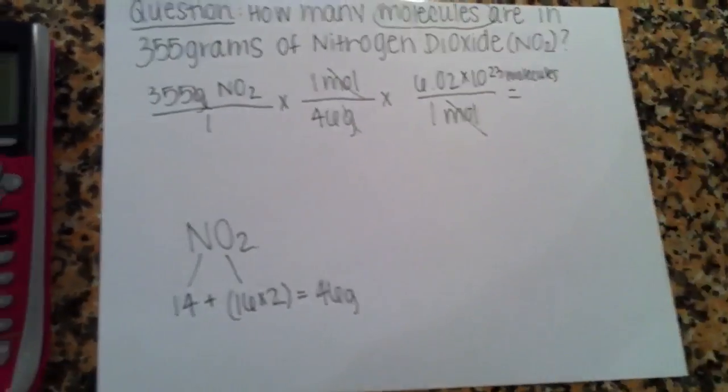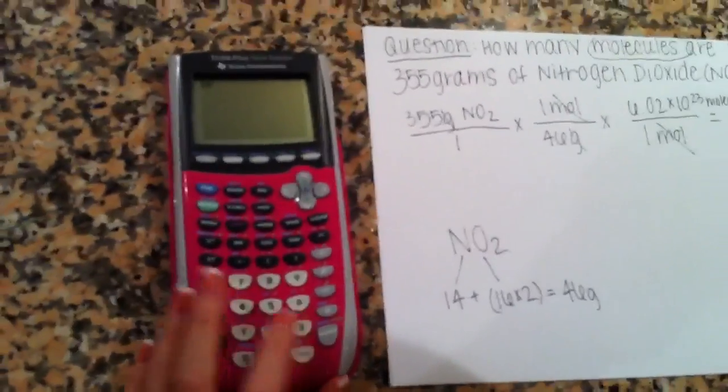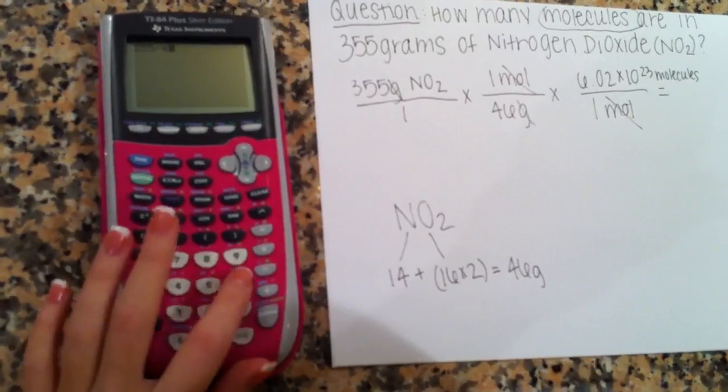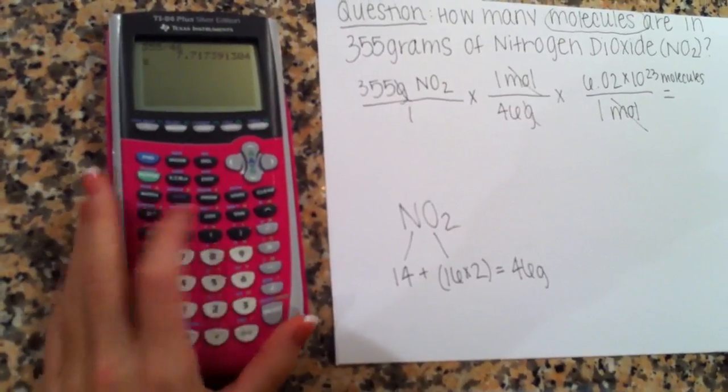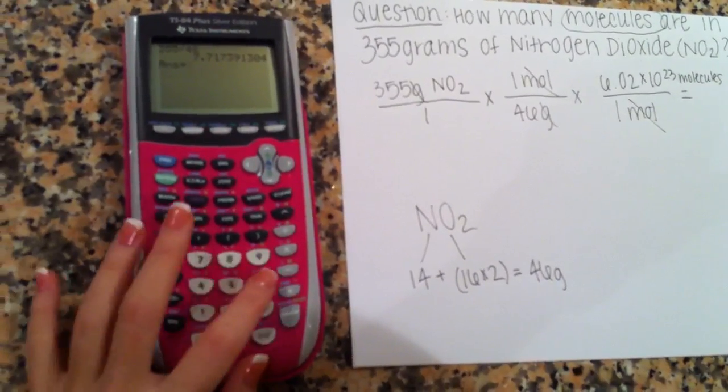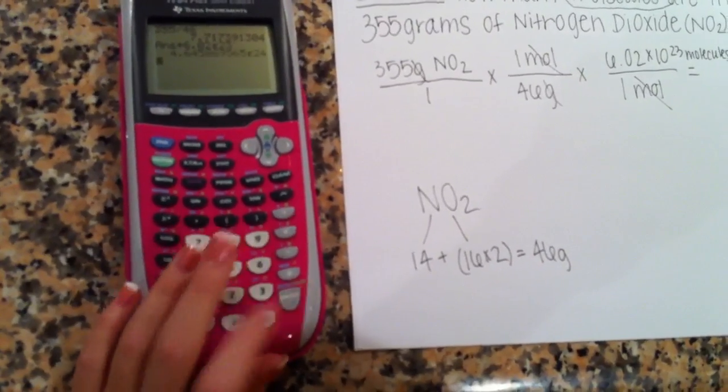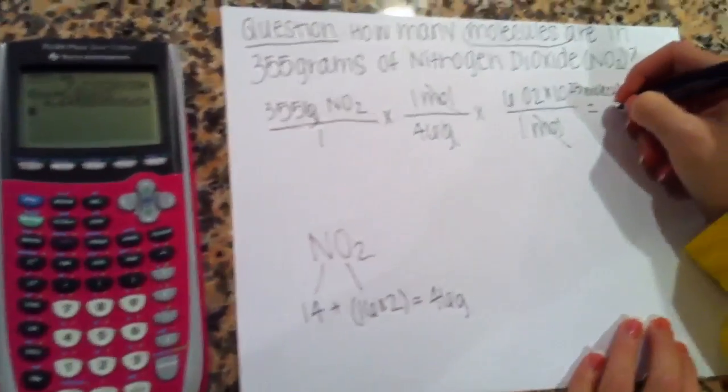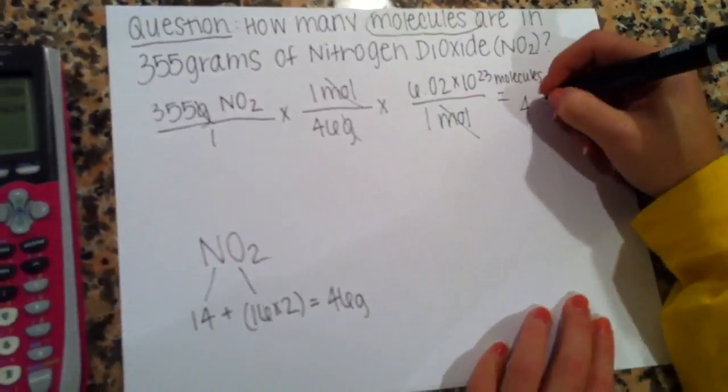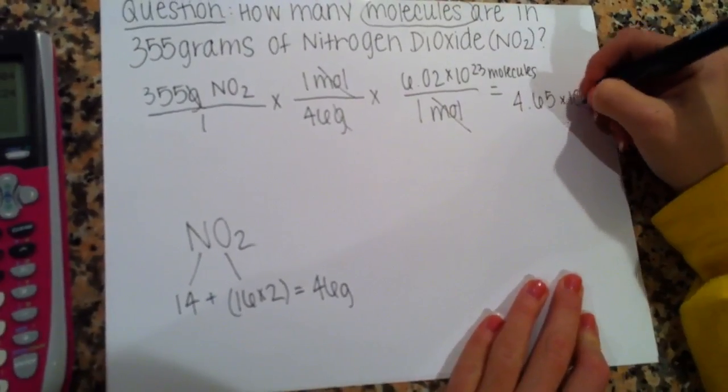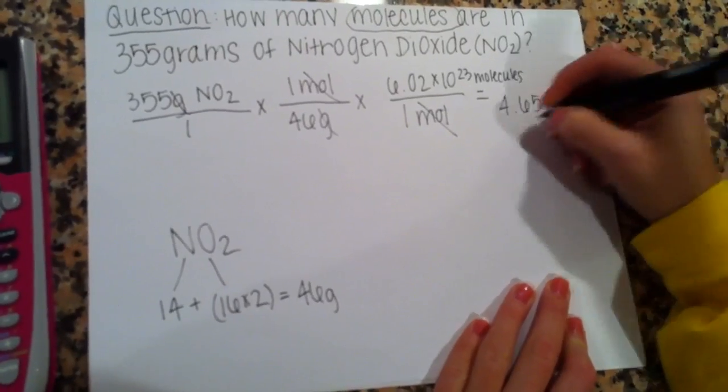So now we type into the calculator 355 grams divided by 46 grams. And then we multiply by 6.02 times 10 to the 23rd and our answer is 4.65 times 10 to the 24th molecules.